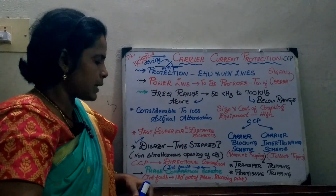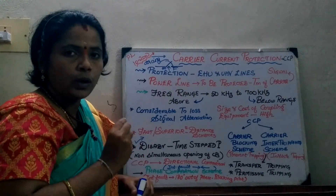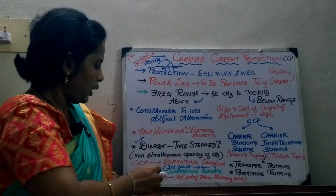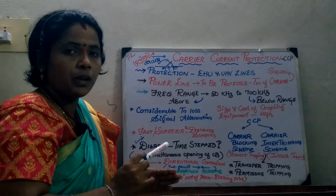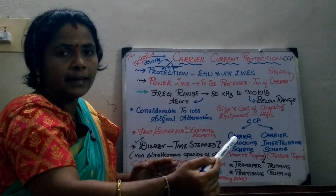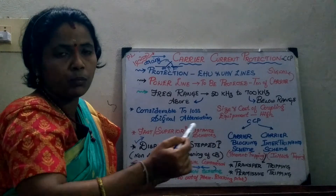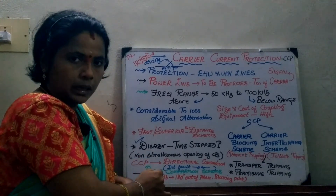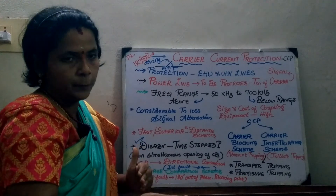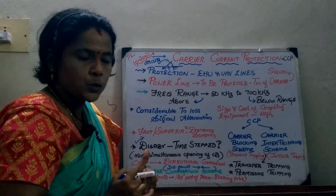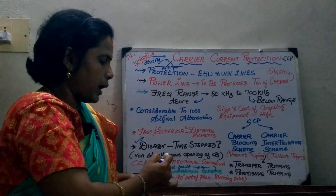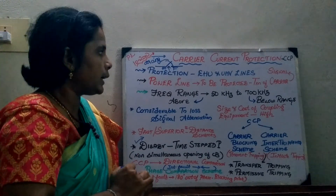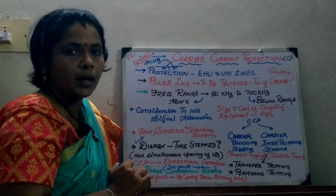Moving on to the phase comparison scheme — from the name itself, it is clear that we compare the phase or magnitude of the current entering and leaving. In normal condition and external fault, the currents at the sending and receiving ends will be in the same phase. Whereas when a fault occurs, the phase of the current will differ — they will be 180 degrees out of phase with each other. In this case, the phase comparison scheme acts as a blocking pilot. This concludes today's session on the introduction to carrier current protection. In the next session, we will see the working of the phase comparison scheme of carrier current protection.